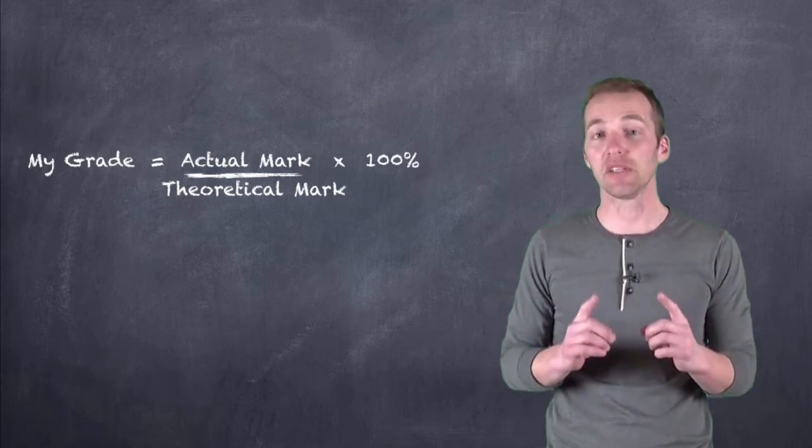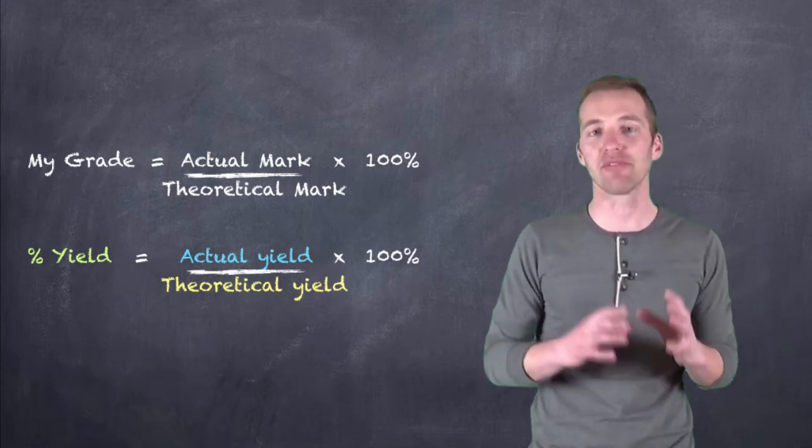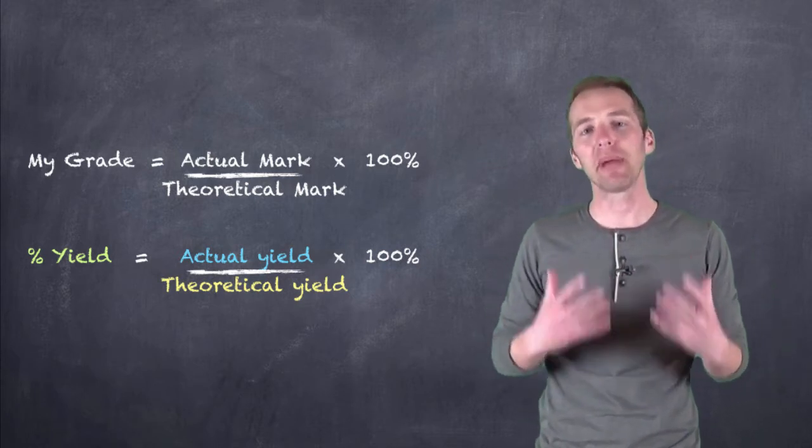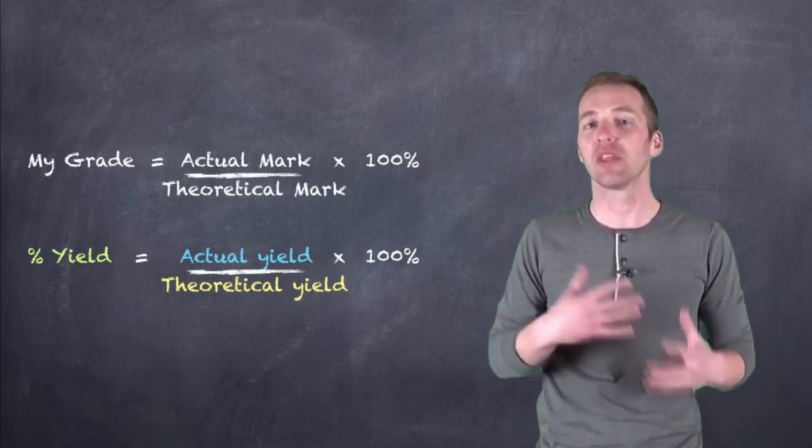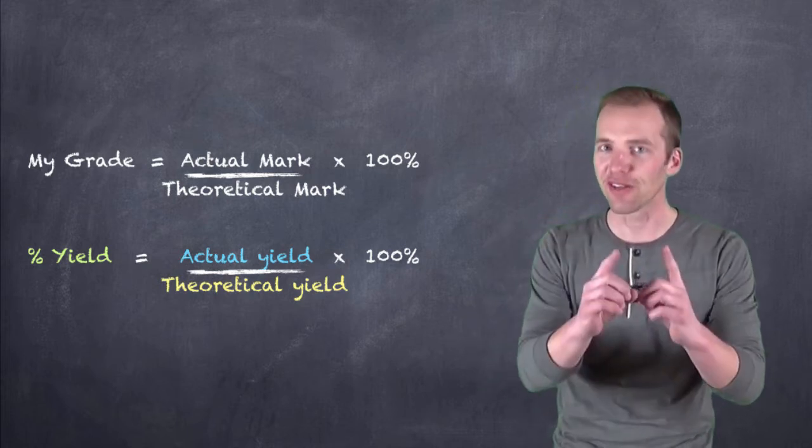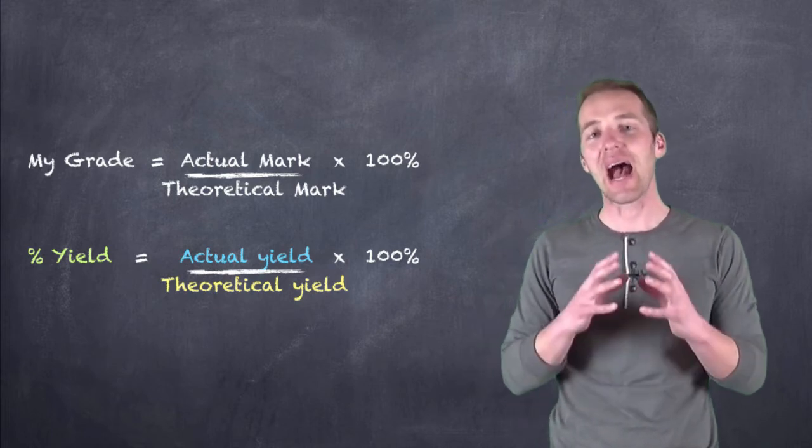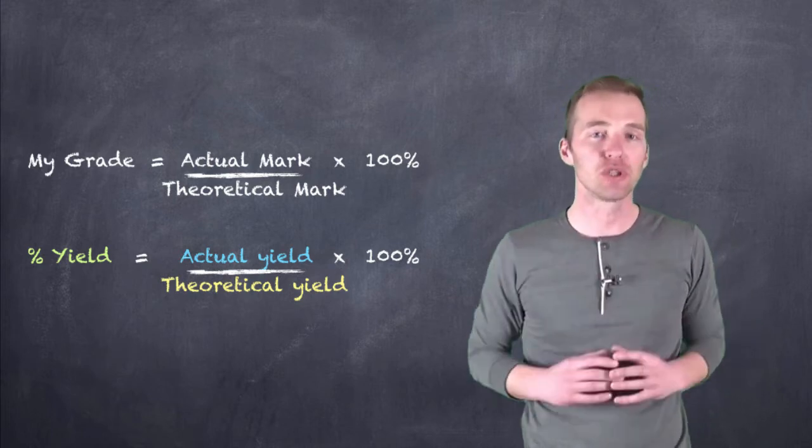Now, percent yield kind of acts in the same way. What it does is it takes the actual mass that you obtain from that chemical reaction and compares it to the theoretical mass that you should have got based on your stoichiometric calculations. So there it is again, that stoichiometry that you're going to use to calculate how much product should be produced.